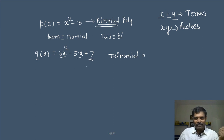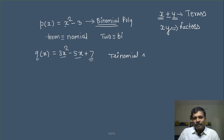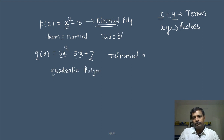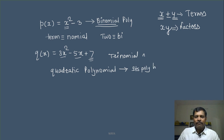अब इस polynomial में जो first term है, उसका highest power देखो — two। तो इसको power के हिसाब से और एक नाम दिया जाता है। जिस polynomial का highest power, मतलब degree, दो होता है, उसको बोलते हैं quadratic polynomial। Quadratic polynomial का meaning: it is a polynomial having degree two. Terms कितने भी रहें, जितने भी रहें, लेकिन अगर highest power two है, तो यह quadratic polynomial है।